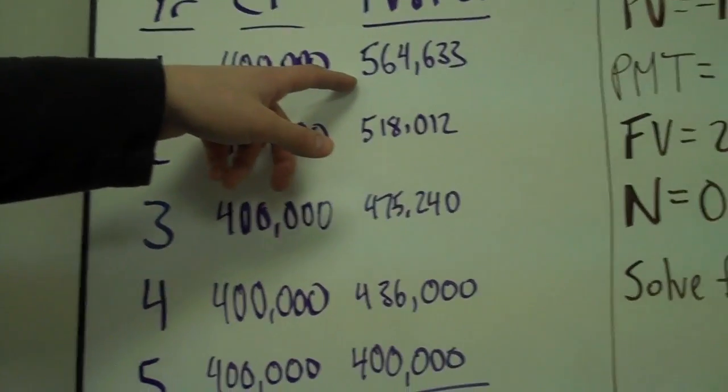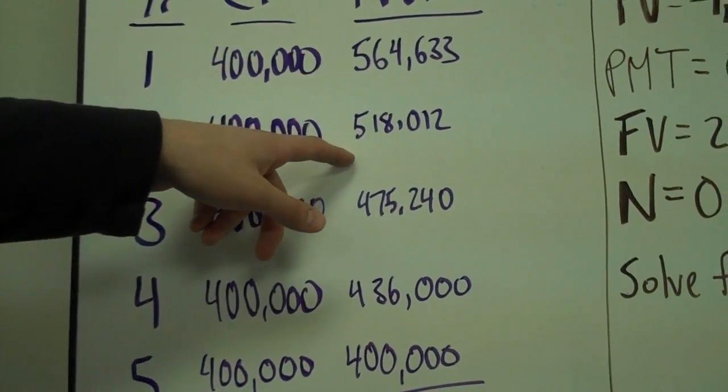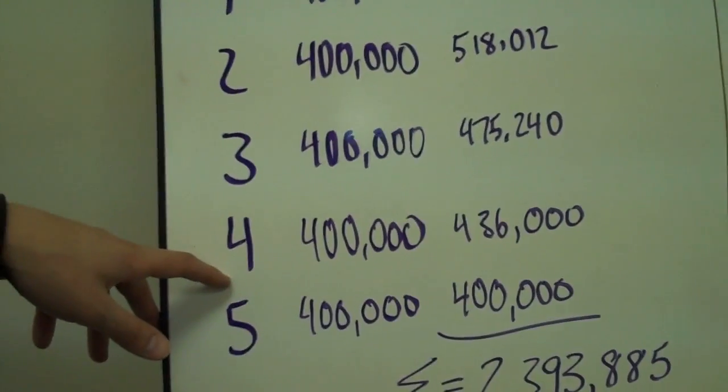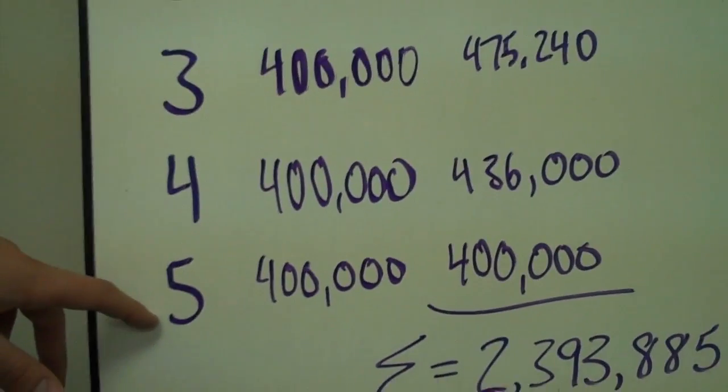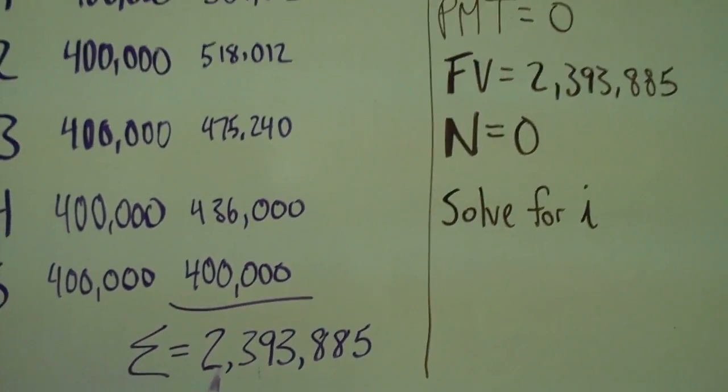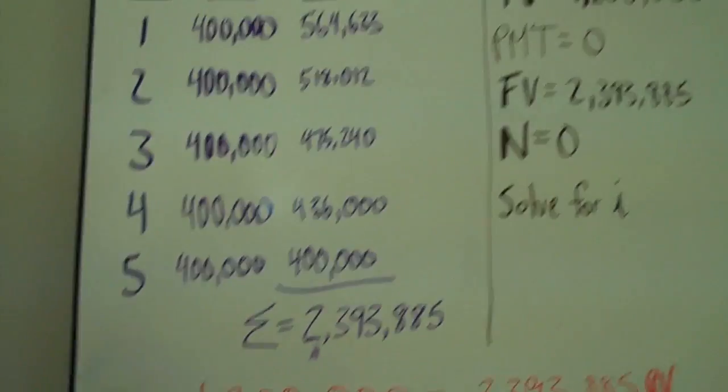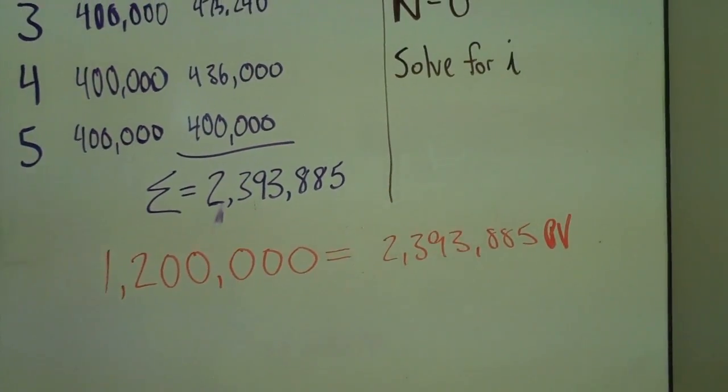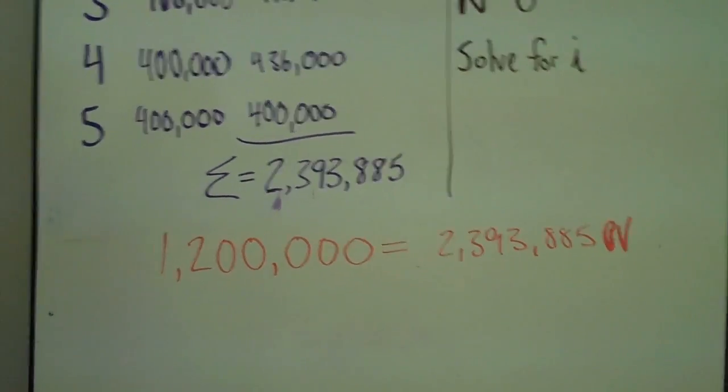For the first year, it is 4 more years left to invest. Second year is 3 more years. Third year is 2 more years left to invest. The fourth year is 1 more year left to invest. And the fifth year, we don't have any time at all because the project is over with. So we take the future value of all those cash flows and we come up with $2,393,885.